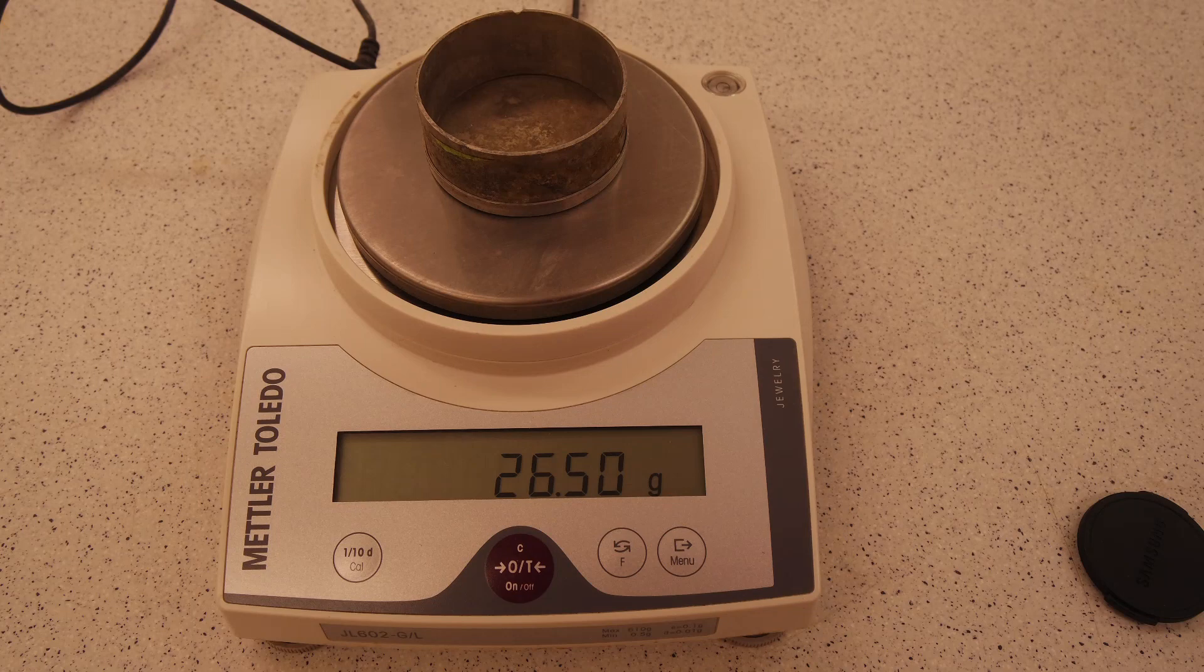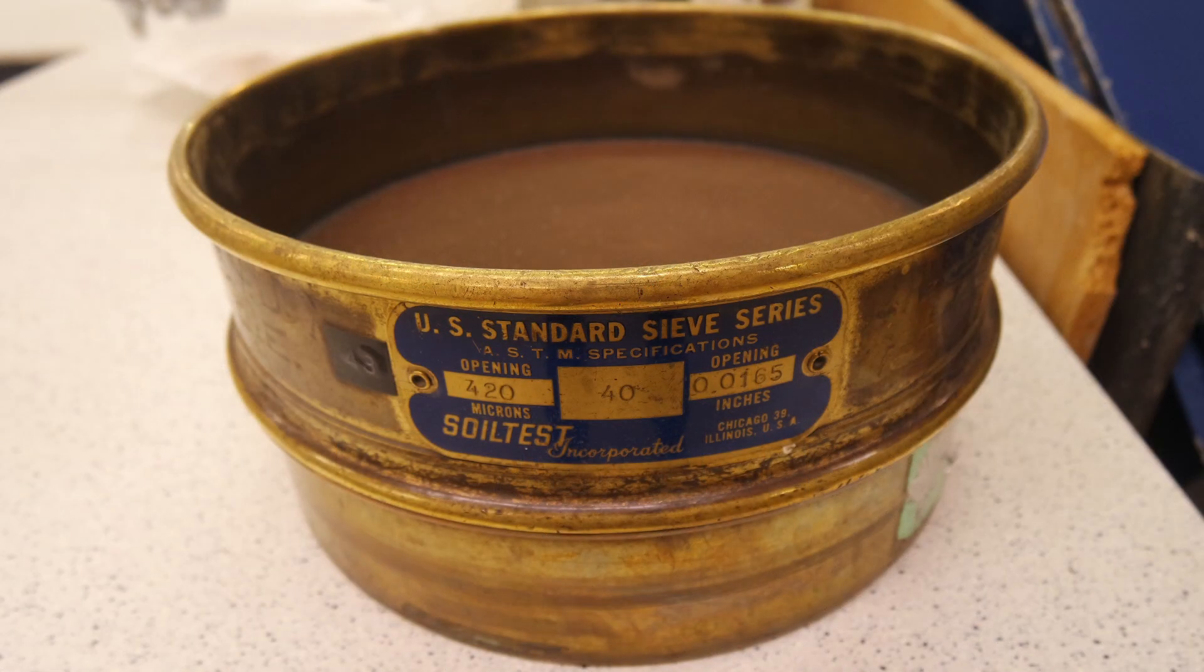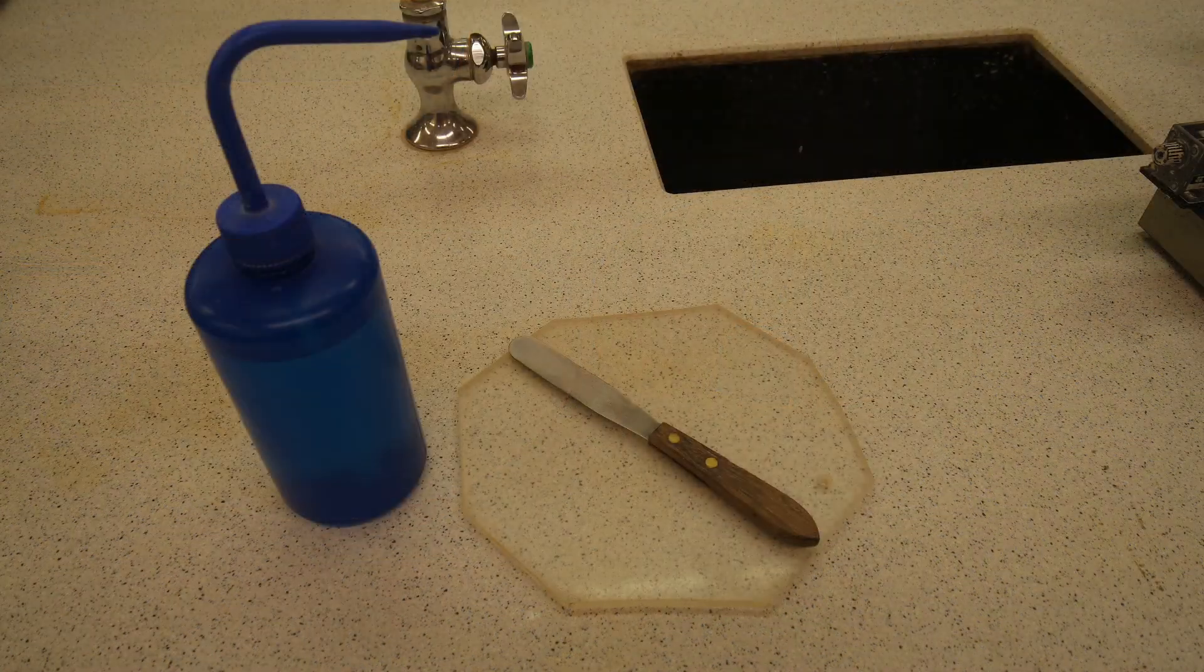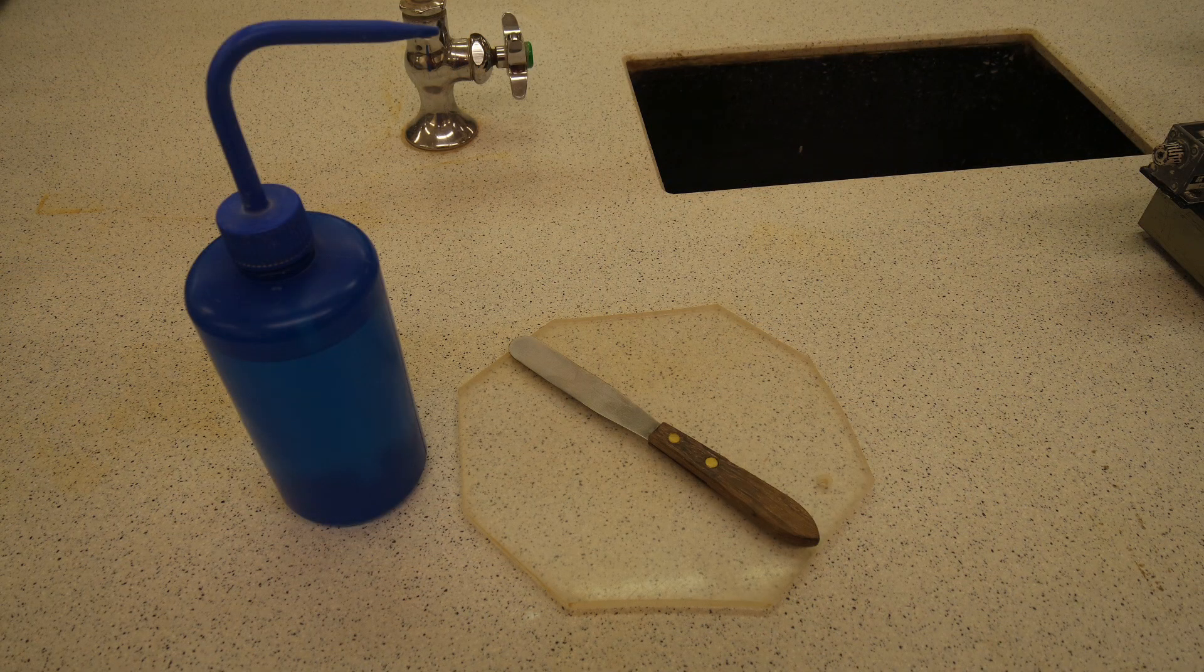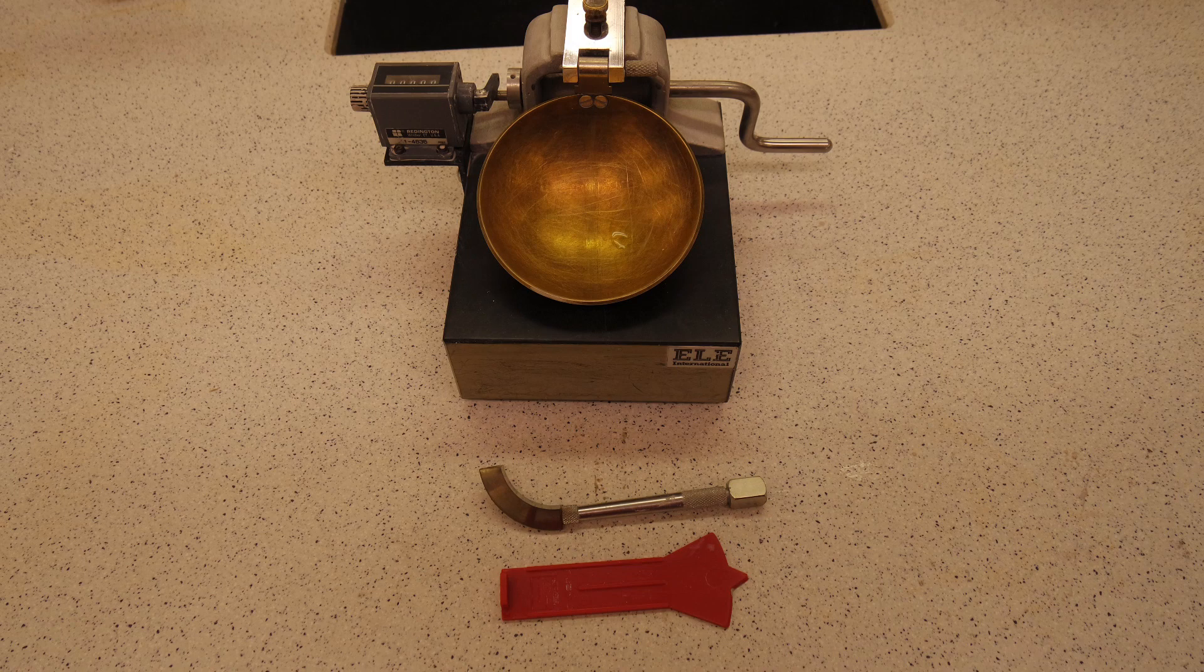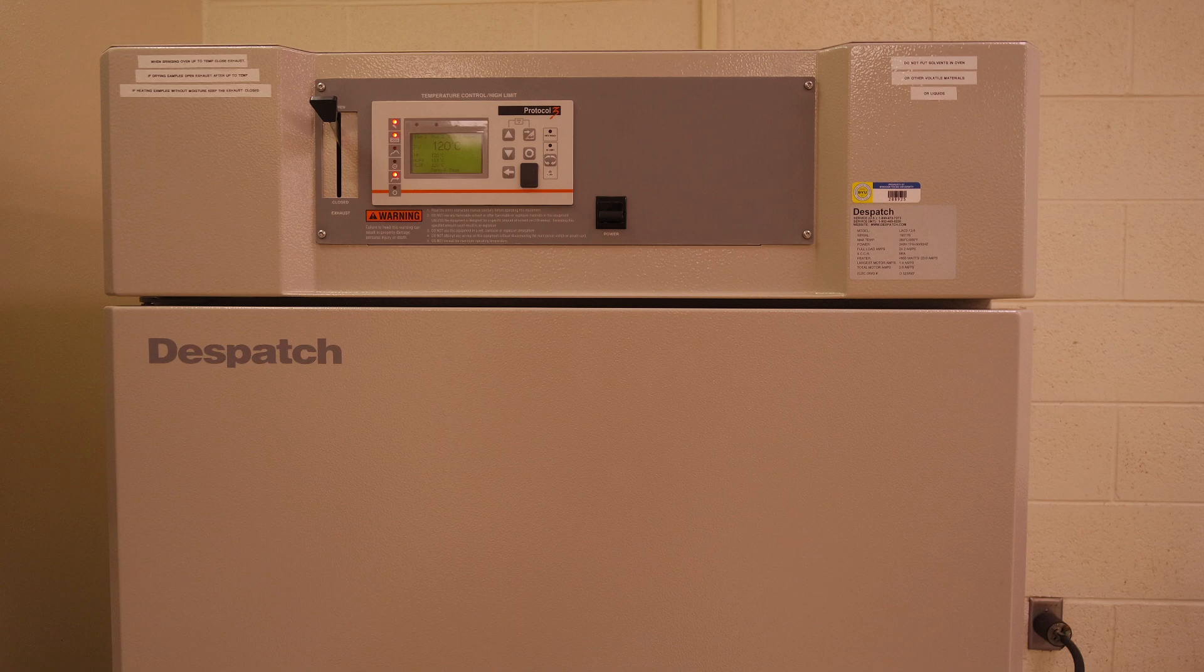We will need the following items to perform this test: sample containers, a number 40 sieve, mixing dish, mortar and pestle, spatula, squeeze bottle with distilled water, a glass plate, a balance, a Casa Grande liquid limit device with grooving tools, and an oven.